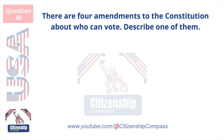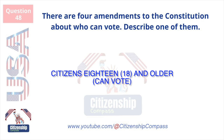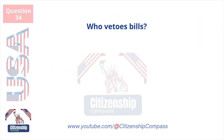There are four amendments to the Constitution about who can vote. Describe one of them. Citizens 18 and older can vote.